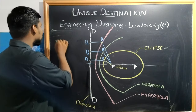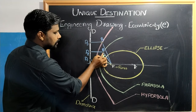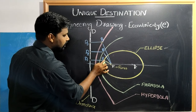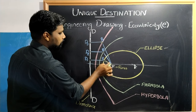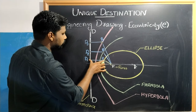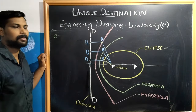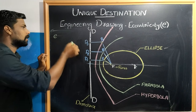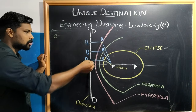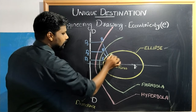Eccentricity is defined as the ratio of the distance of a point P from the focus, to the perpendicular distance from the directrix. We will now discuss the eccentricity of each conic, starting with the Ellipse.